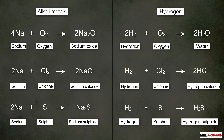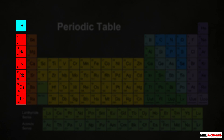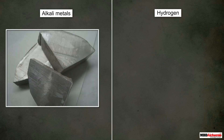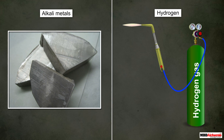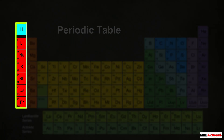In a similar manner, with sulfur, an alkali metal forms its sulfide, and hydrogen forms hydrogen sulfide. So hydrogen shows a lot of similarities with alkali metals in its chemical properties. However, it is still not placed with the alkali metals in Group 1, due to some of its dissimilarities with these elements. For example, alkali metals are solids at room temperature, whereas hydrogen is a gas at room temperature.